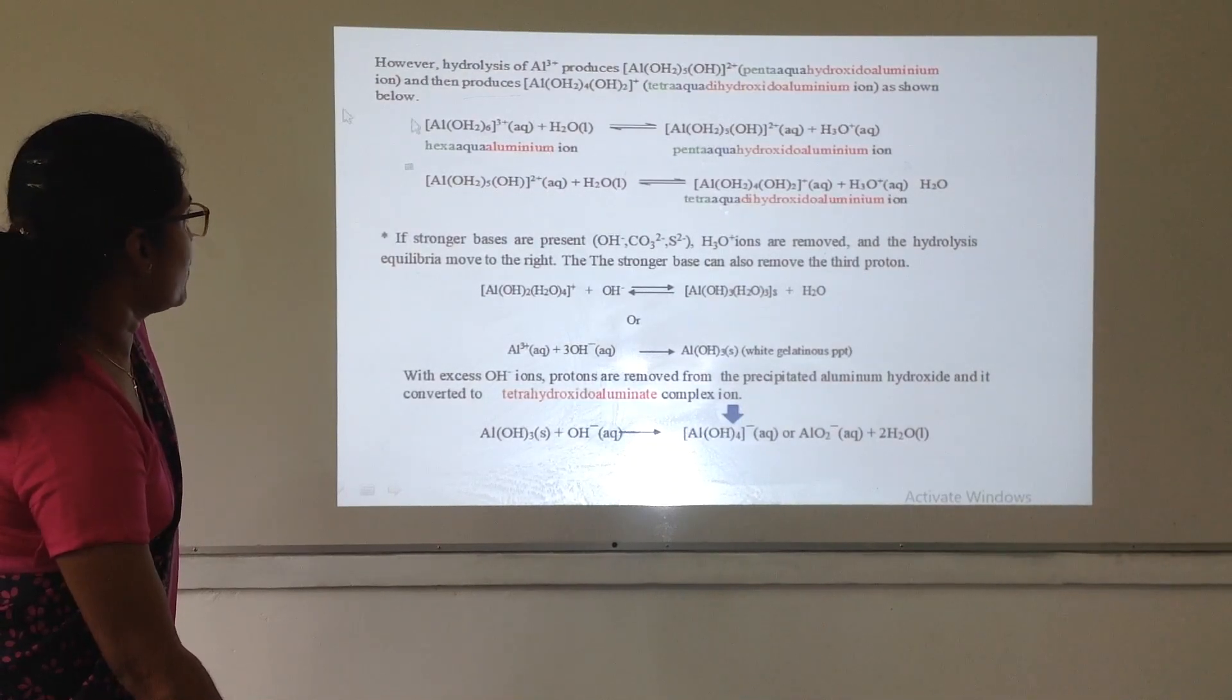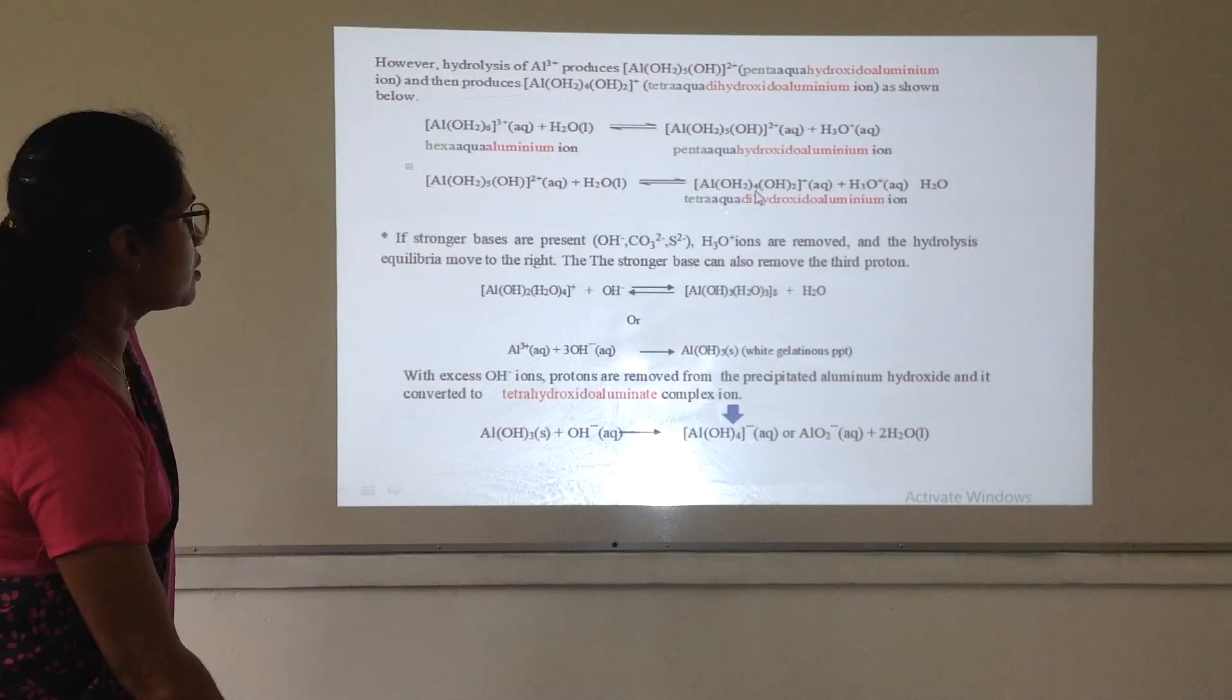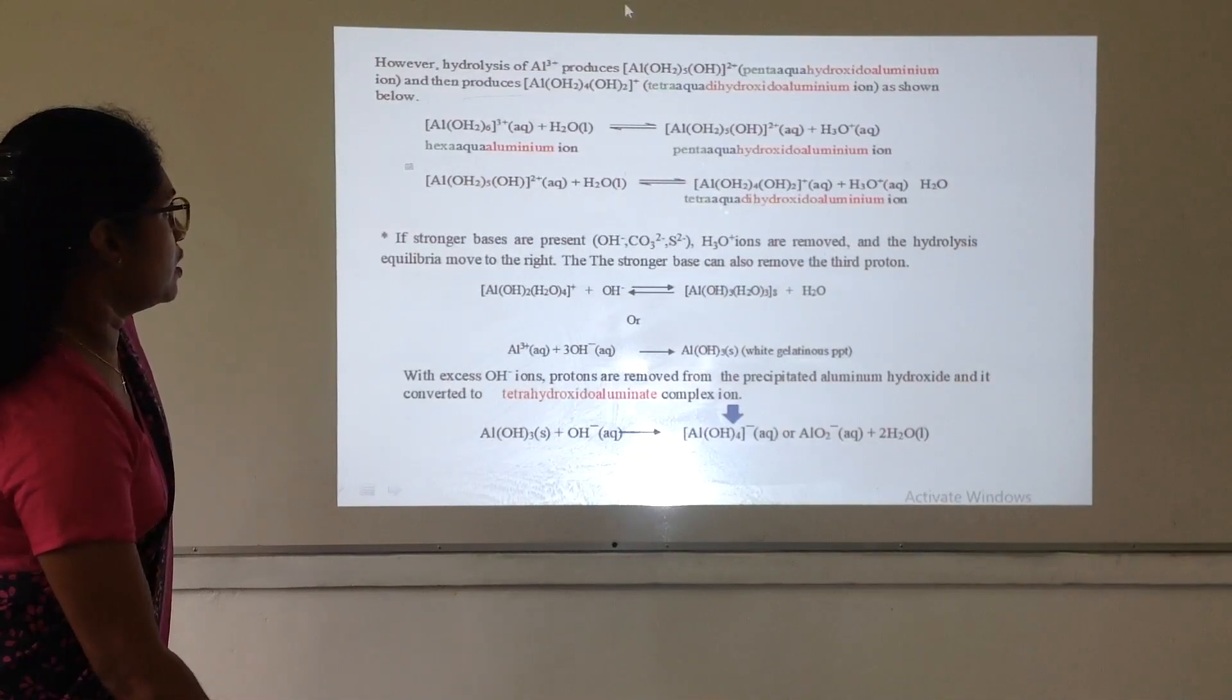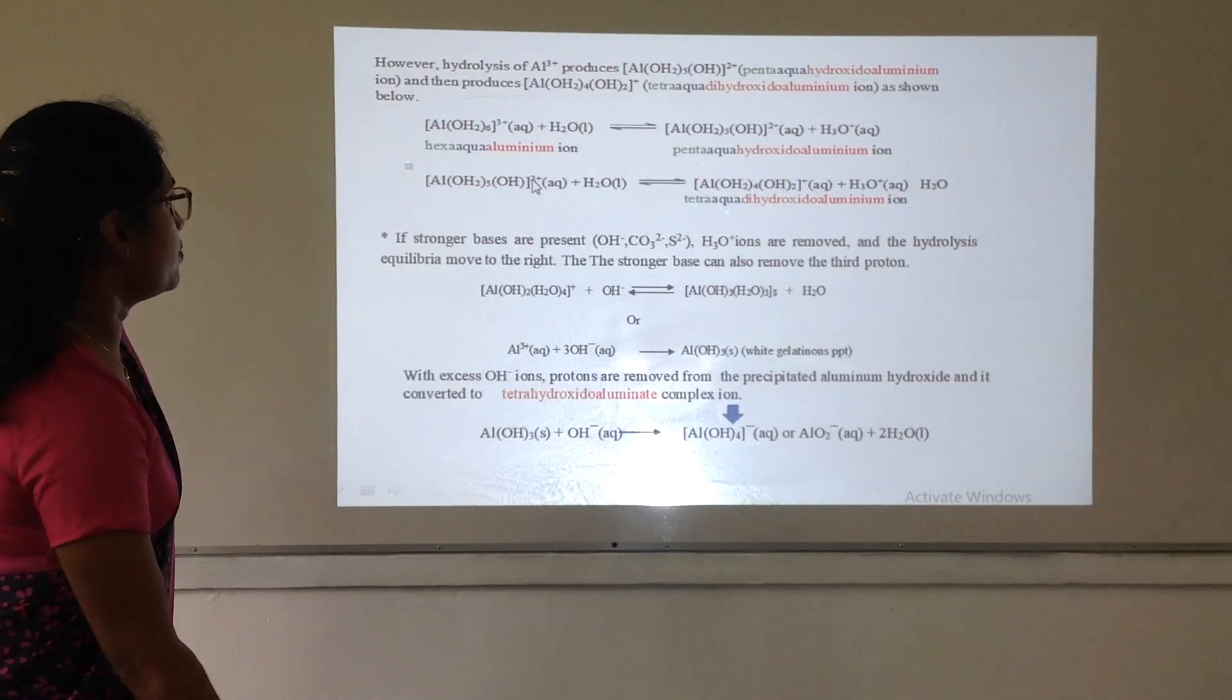Again, this penta-aqua-hydroxyl aluminium ion removes another proton and turns to tetra-aqua-di-hydroxyl aluminium ion. Here, you can see that 6 water molecules here, 5 water molecules here, and 4 water molecules here.